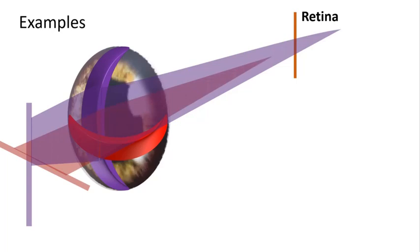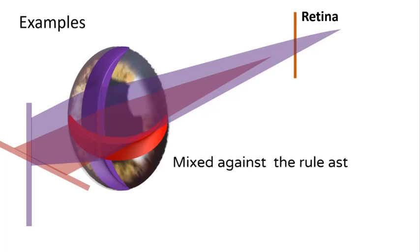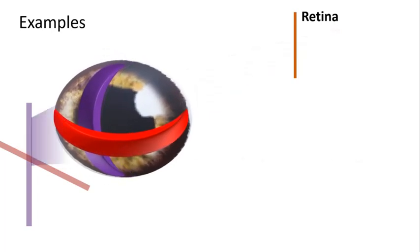Here: no meridian focuses on the retina, so it is either compound or mixed. Step two, both focus on opposite sides, so it is mixed. Step three, the horizontal meridian is more myopic, therefore it is against the rule. This is a mixed against-the-rule astigmatism.